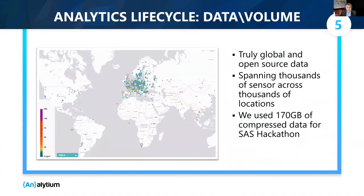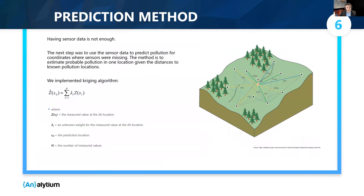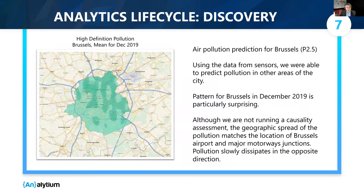How can we better understand air pollution? We used Luftdaten data, an open data project, to collect data for Brussels and Warsaw. And we implemented the Kriging algorithm. Kriging allows us to predict pollution for areas without sensors based on the data from sensors nearby. What does it look like in practice?